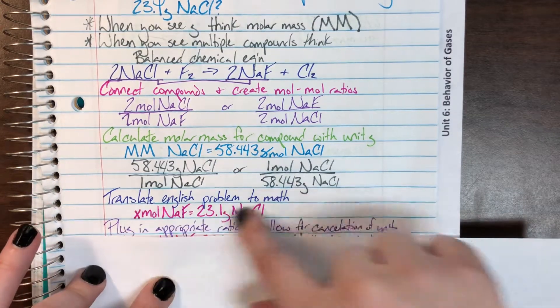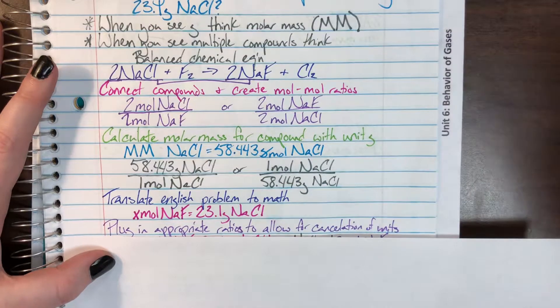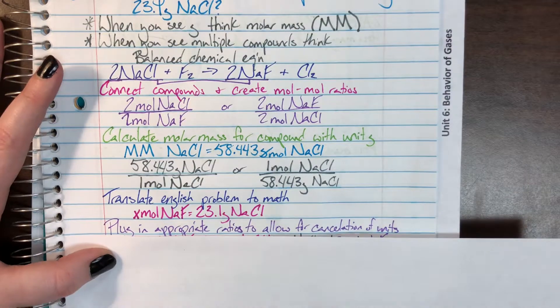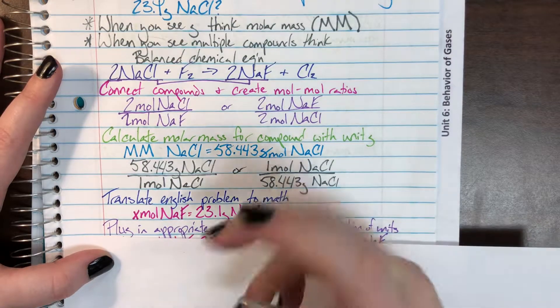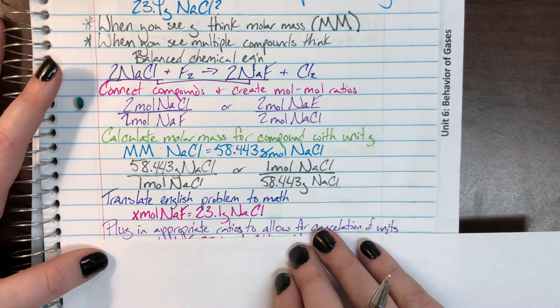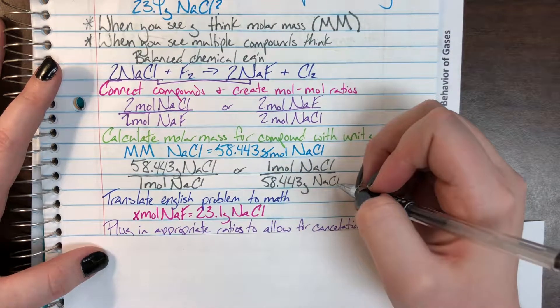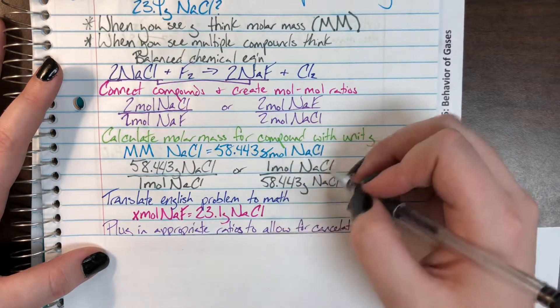Once I have my actual setup down, I can choose my appropriate ratios that allow for cancellation of units. Which means I'm going to look for something that will allow me to cancel grams of sodium chloride. Which would be the one with grams of sodium chloride on the bottom here. So, I will end up choosing this ratio.